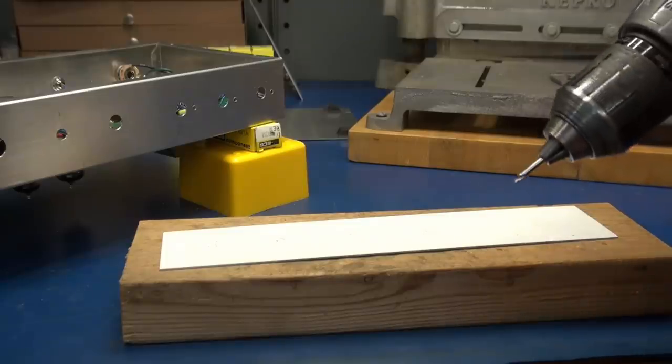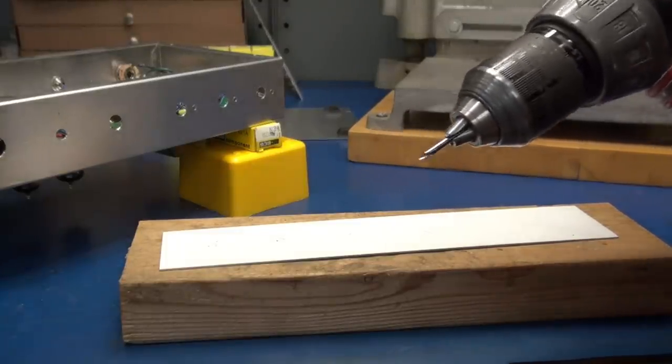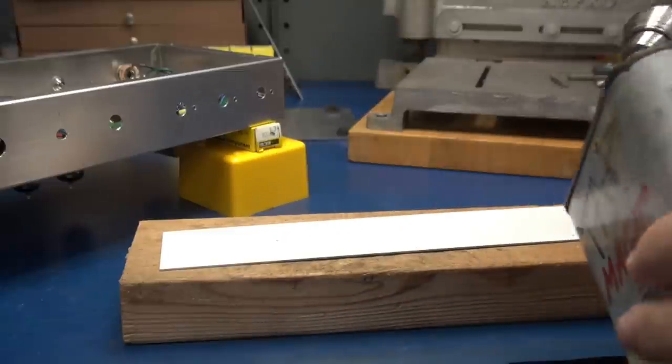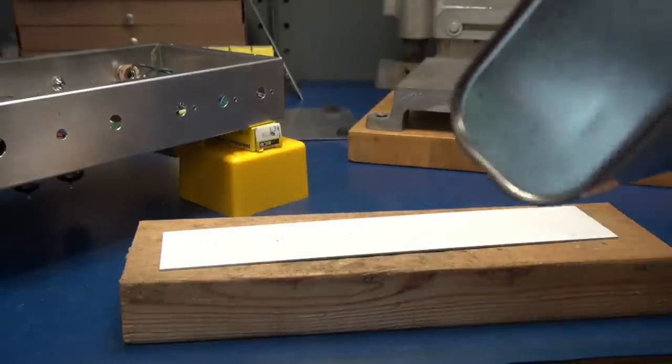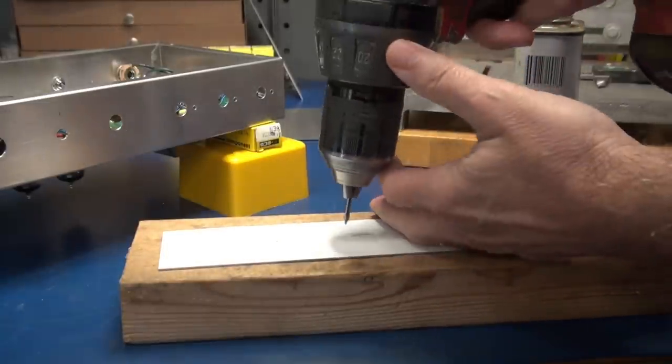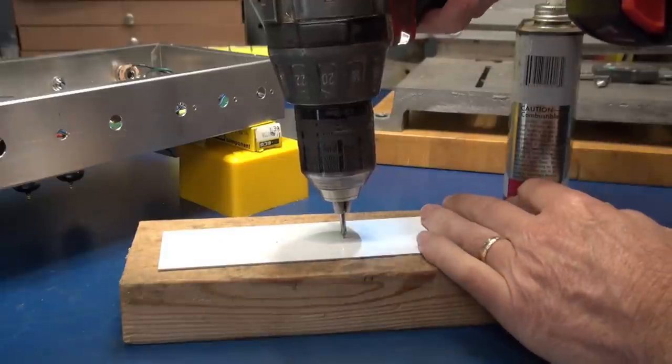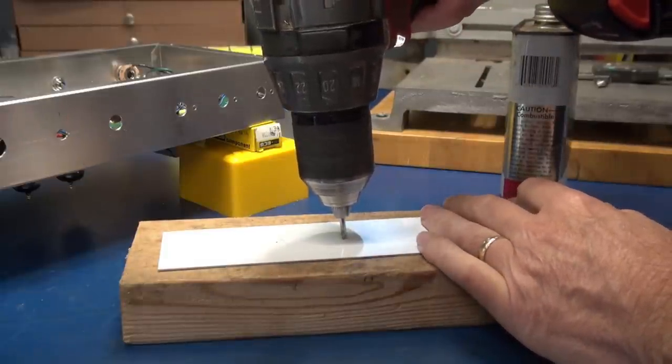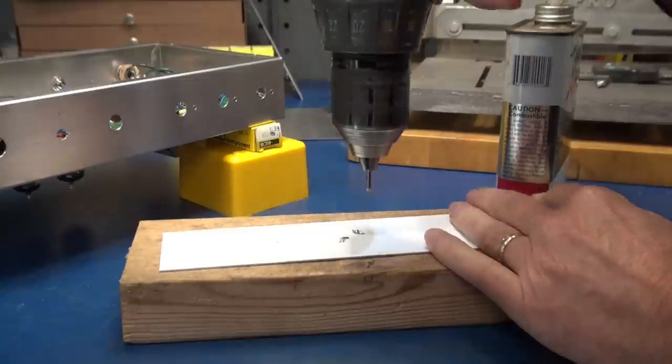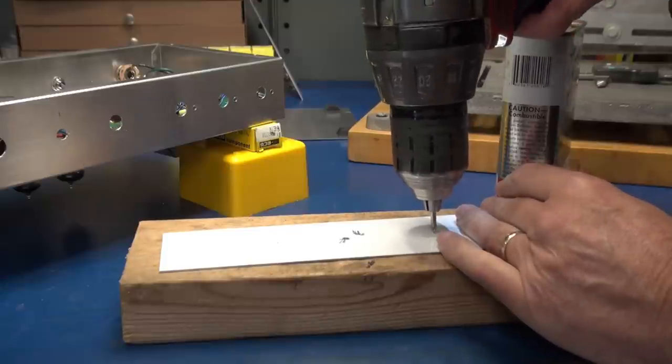So I have all the holes center punched and now we're going to use this little eighth inch center drill. I take a little bit of tap magic, put that on the tip. The center drill seats right into that center punch area. And I drill them all out initially with the eighth inch bit.